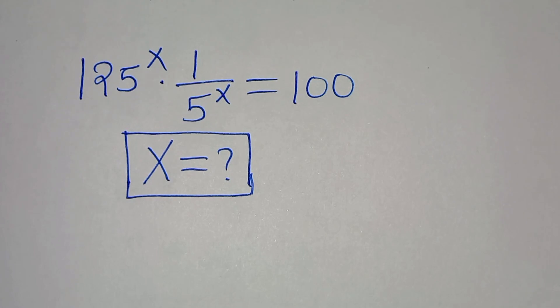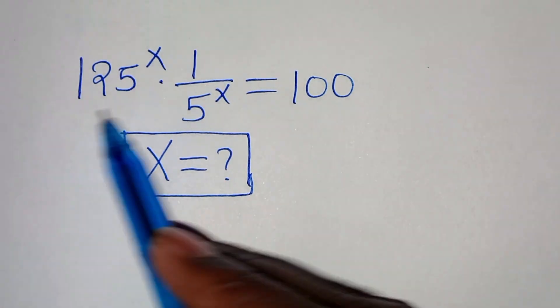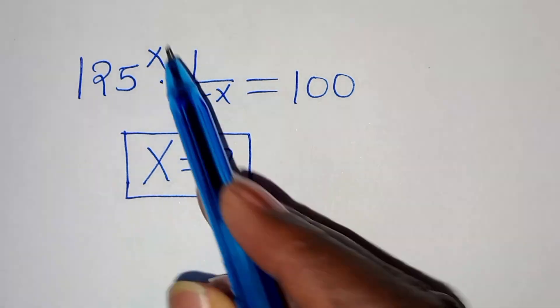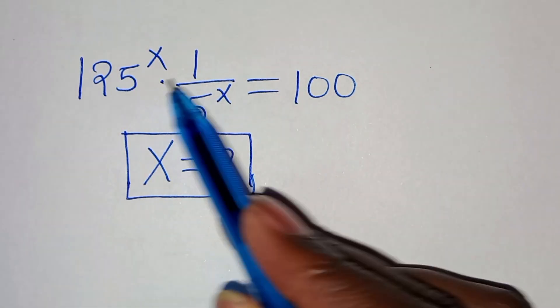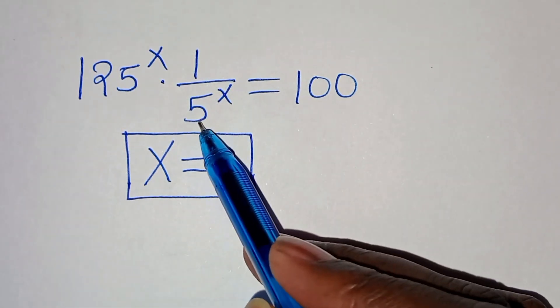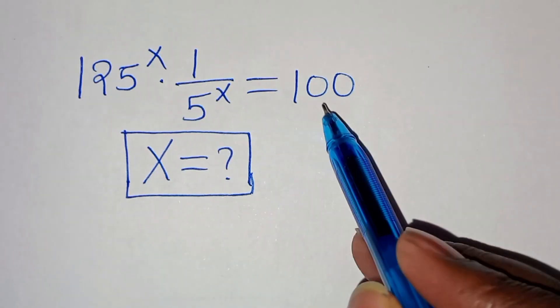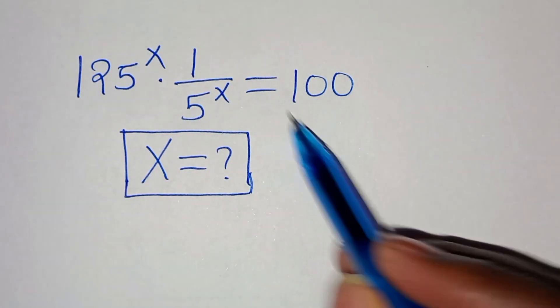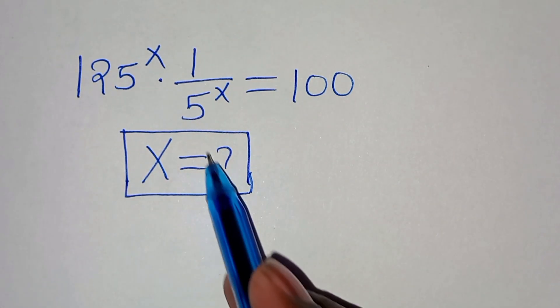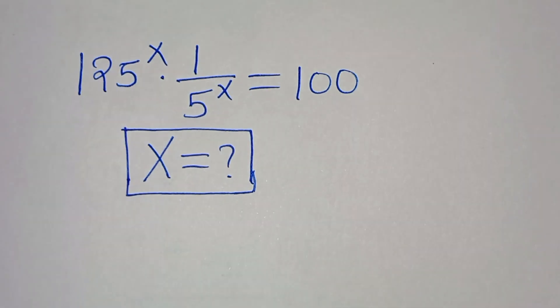You are welcome to solve this nice exponential equation: 125 to the power of x times 1 over 5 to the power of x, and this is equal to 100. So what is the value of x?